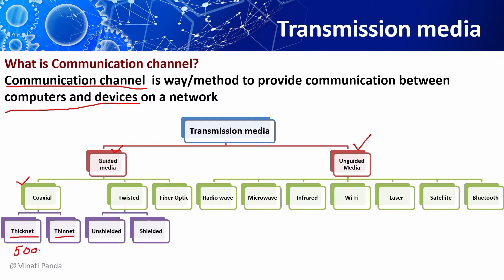Twisted pair cable is classified into unshielded and shielded, and both will have a maximum segment length of 100 meters. The unshielded twisted pair cable will not have an outer covering, while the shielded twisted pair cable will have an outer covering. The shielded twisted pair cable will give more protection from interference and crosstalk.